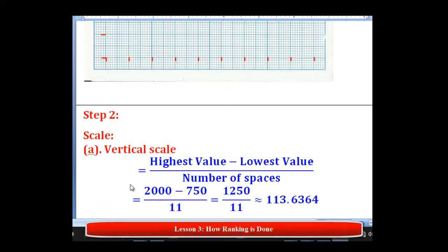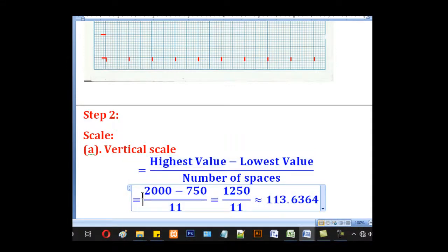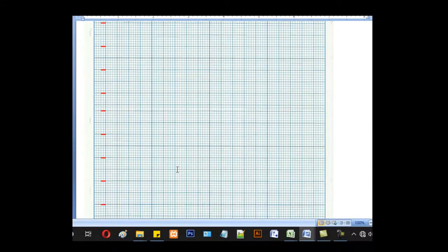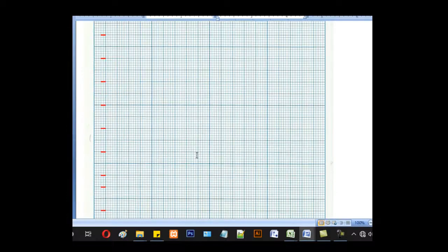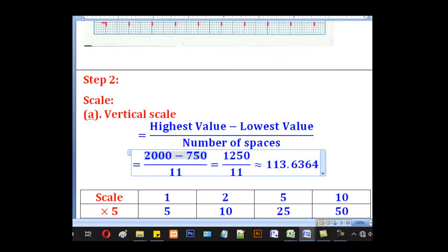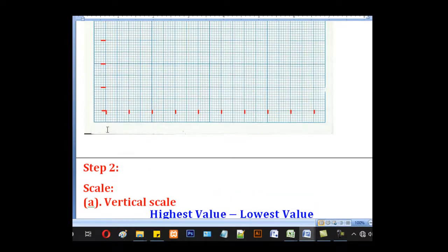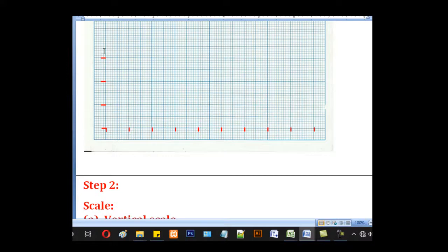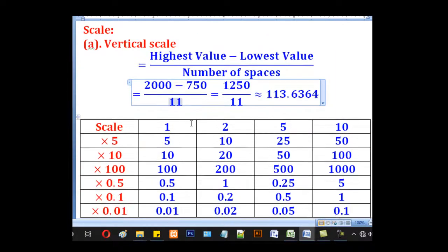After doing that, the next step is to get the scale. The scale is given by the formula, highest value minus lowest value divided by the number of spaces. So for example, for the vertical scale, when you look at this table, the highest value is 2000 and the lowest is 750. So the scale will be 2000 minus 750 divided by 11. Where is this 11 coming from? We have to count the spaces as 1, 2, 3, 4. So when you count up to the end, there will be 11 spaces.